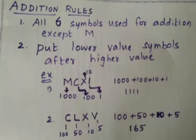The second example is CLXV: C is 100, L is 50, X is 10, V is 5. It's in decreasing order of values. We have to put the lower value after the higher value.